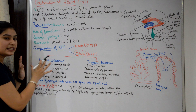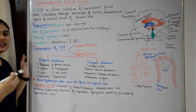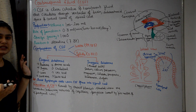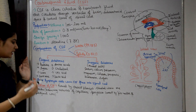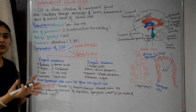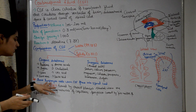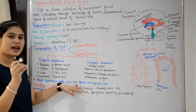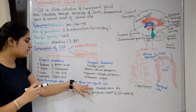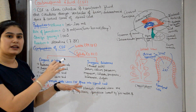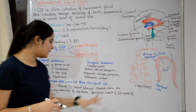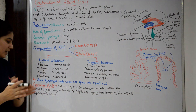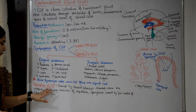CSF also contains some lymphocytes, which are a type of white blood cell that fights infections and microorganisms. These lymphocytes are added to the CSF when it flows through the spinal cord.